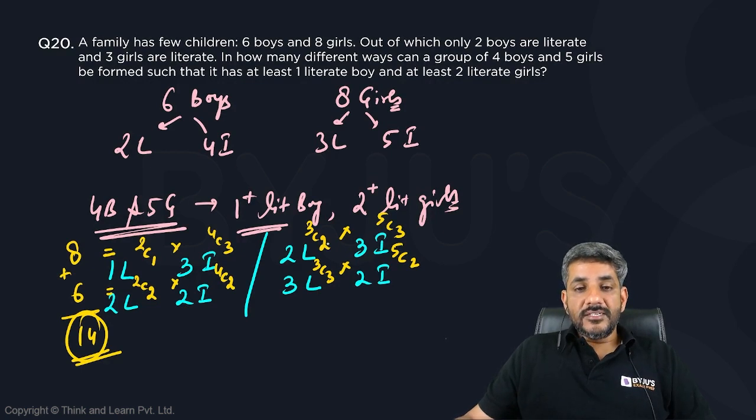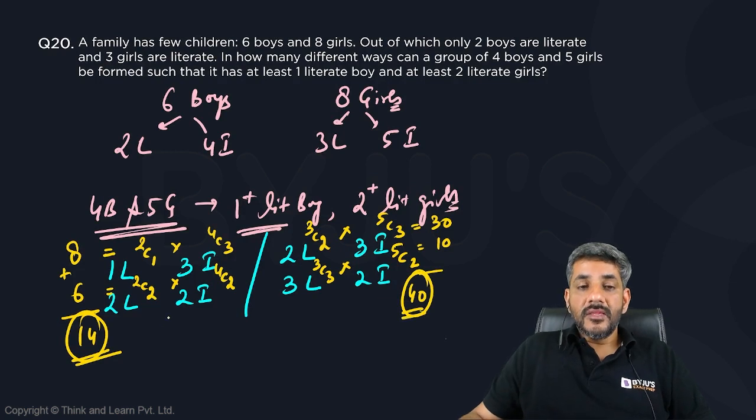Similarly here, 3C2 is 3, 3 into 5C3 is 10—that is 30. And 3C3 is 1, 1 into 10 is equal to 10. I have a total of 40 ways of doing this.